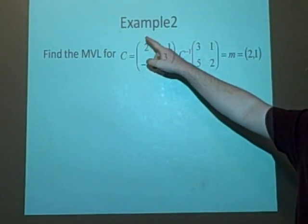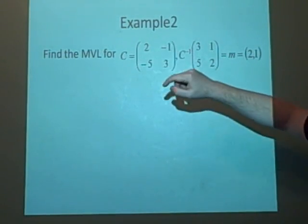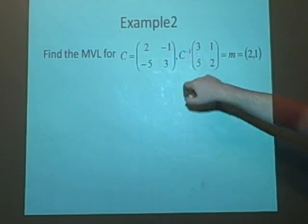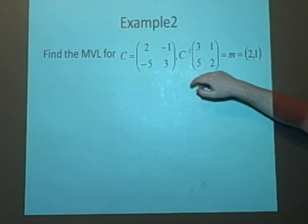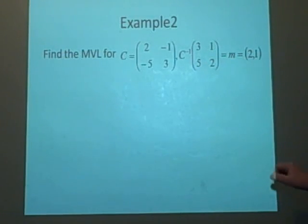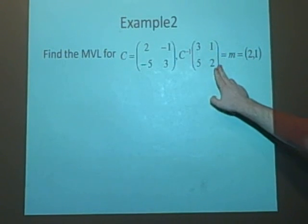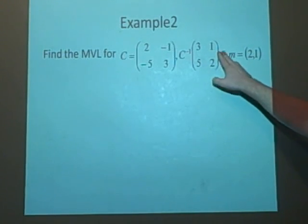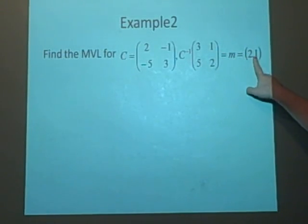We've got our C as 2, minus 1, minus 5, 3, and our C inverse, which you can calculate, is 3, 1, 5, 2. I'll try to make them nice. And we've got our M, just ignore that equals, I don't know why that's there. M is 2, 1.